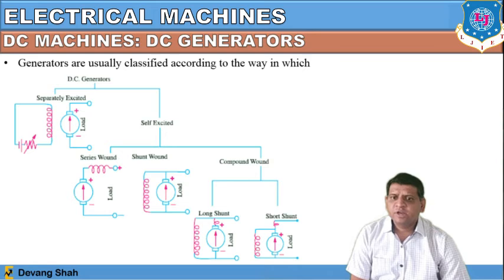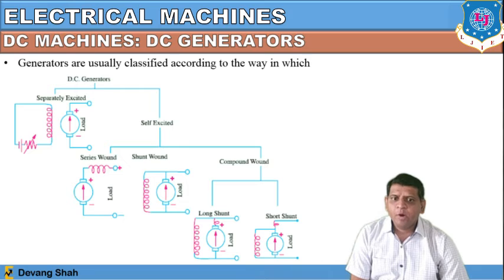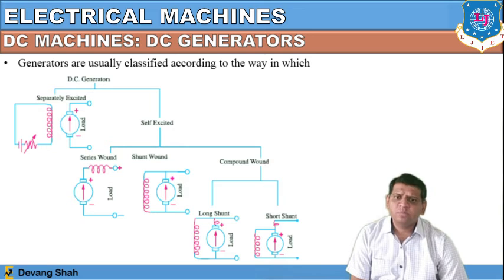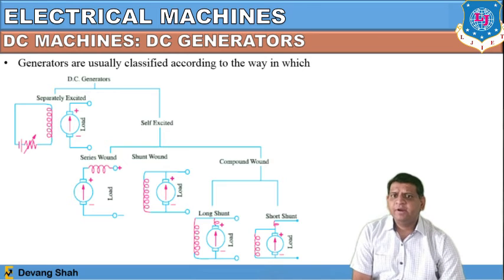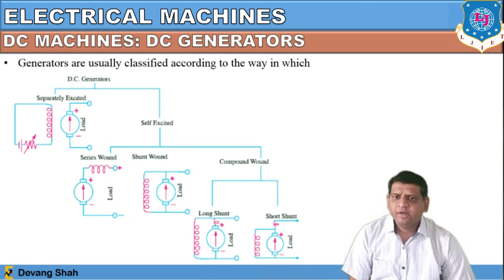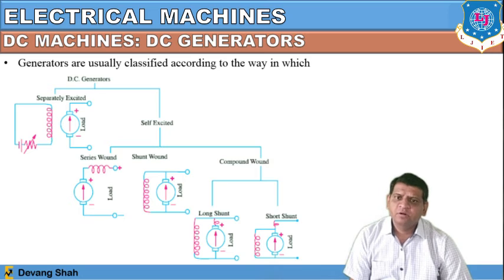In the series configuration, both armature and field windings are connected in series. In the shunt configuration, both windings are connected in parallel. In the compound configuration, you find a combination of both — one is a long shunt and another is a short shunt — so the field winding and armature winding are connected in a combination of series and parallel. These are the three forms of self-excited DC generators: series, shunt, and compound.